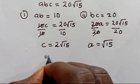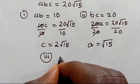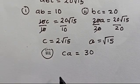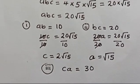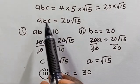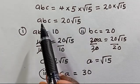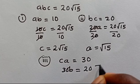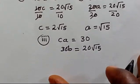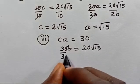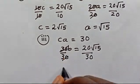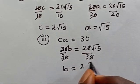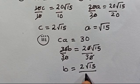Case 3: ca equals 30. Substituting into abc equals 20 root 15, we get 30b equals 20 root 15. Dividing both sides by 30, we find b equals 2 root 15 over 3.